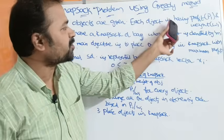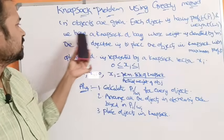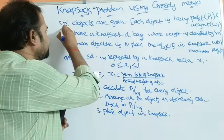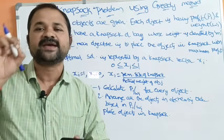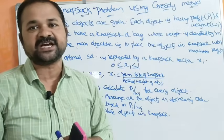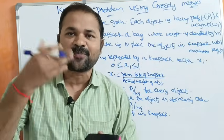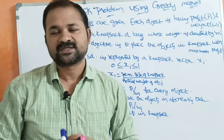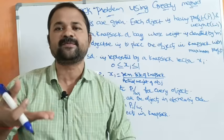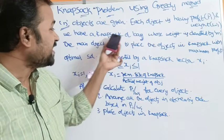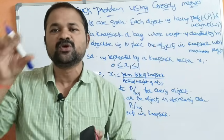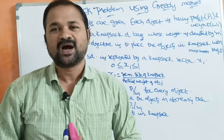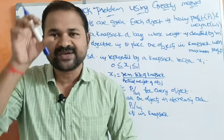N objects are given. Each object has a profit PI and weight WI. We have a Knapsack or bag whose capacity is denoted by M. There are N objects — the first object has profit P1 and weight W1, the second has P2 and W2, and so on up to the fifth object P5 and weight W5. We have a Knapsack or bag — let's assume the size of the Knapsack is 20 kg, so M equals 20 kg.